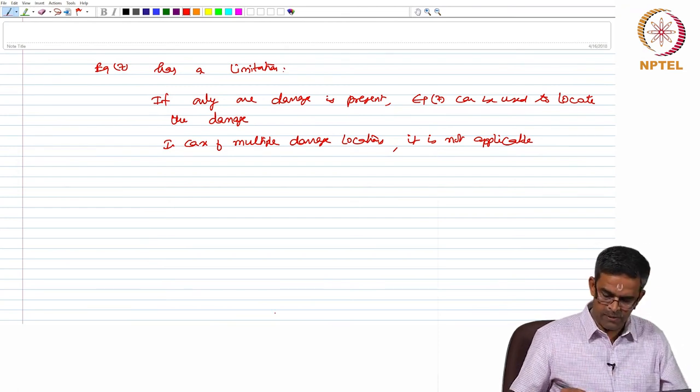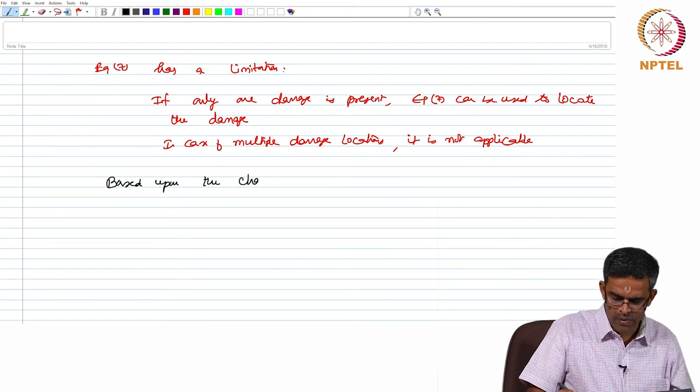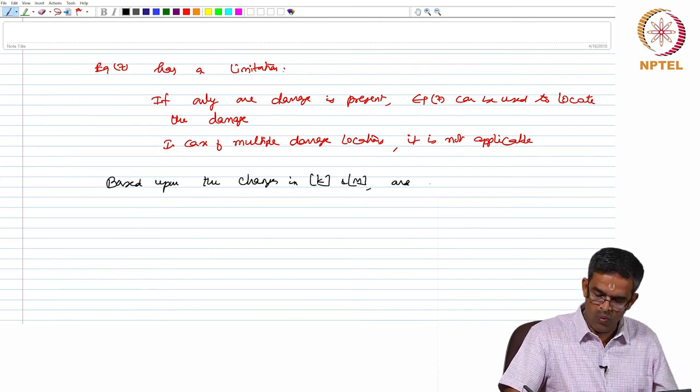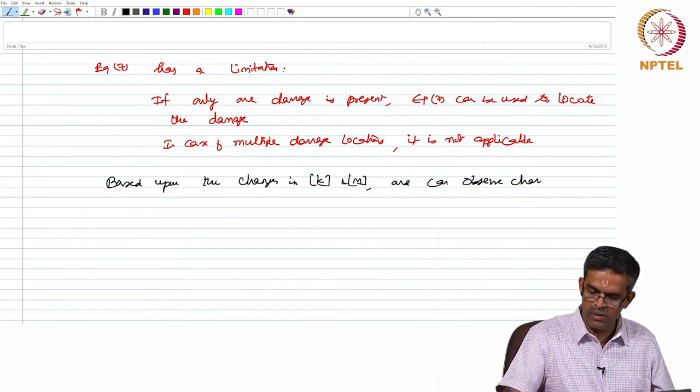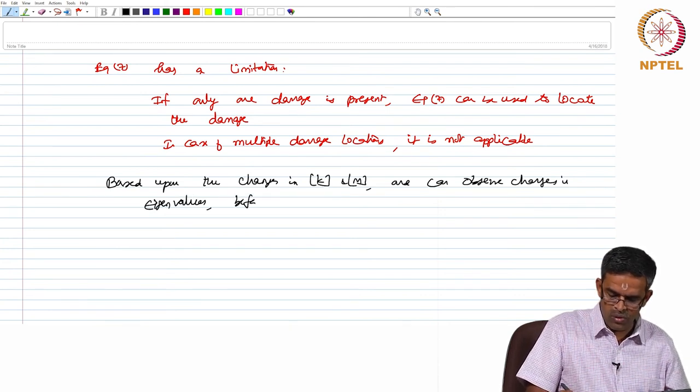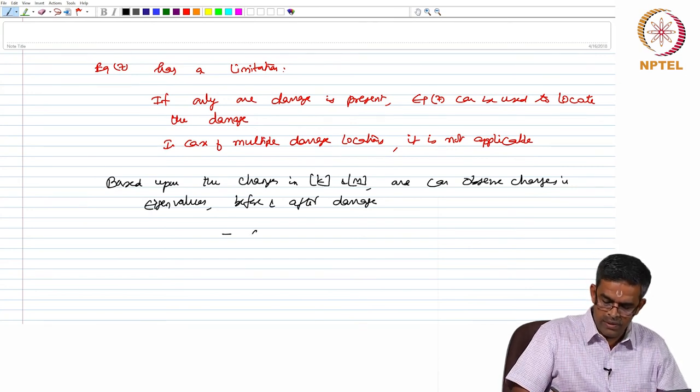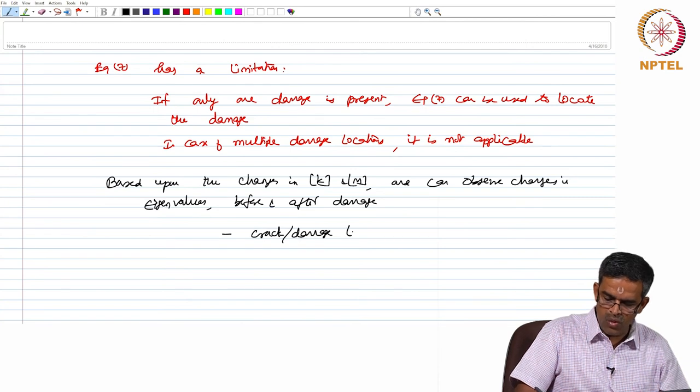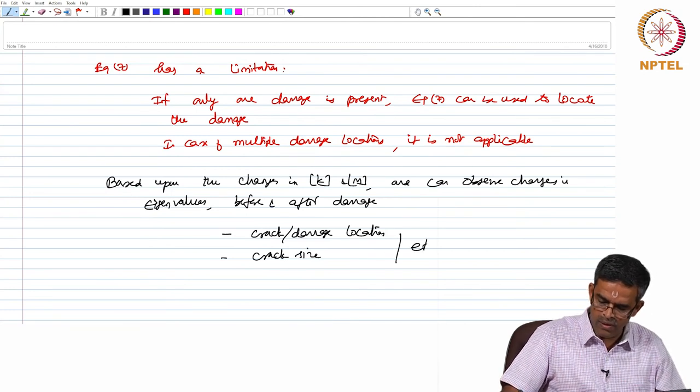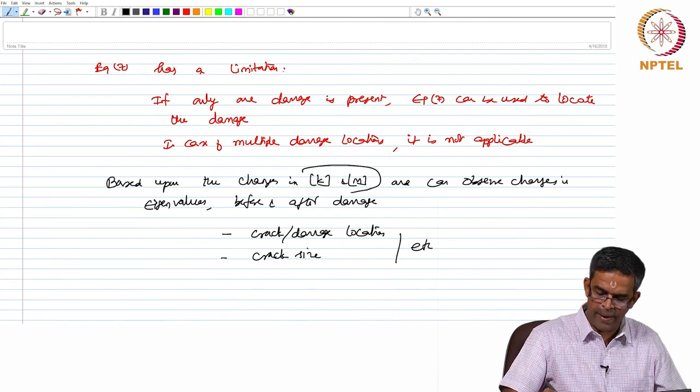We have now seen, friends, that based upon the changes in stiffness and mass matrix, one can observe changes in eigenvalues before and after damage. Then one can identify the crack or the damage location, crack size etcetera as we explained in the previous slides. Now, the interesting point comes: how to find this changed k and m for different models.